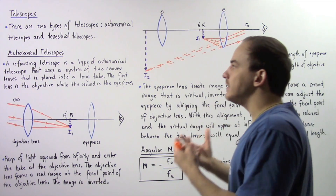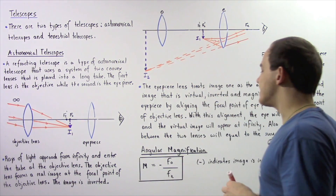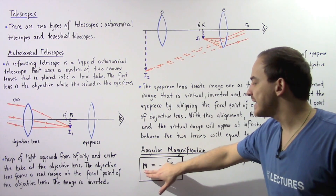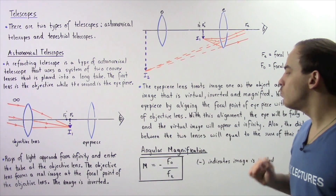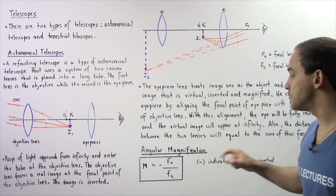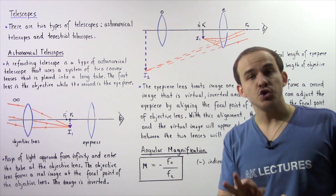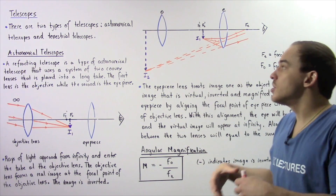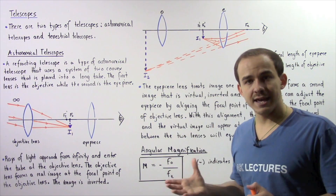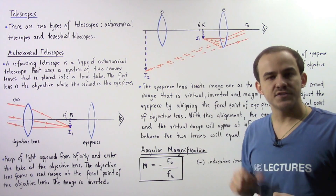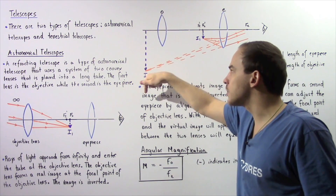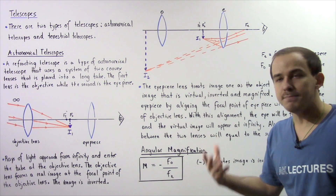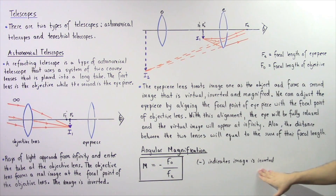The magnifying power of a telescope is also known as the angular magnification, given by the equation: M = −FO / FE. The larger the objective focal length is compared to the eyepiece focal length, the greater the magnification. The negative sign indicates that the image formed by these two lenses is an inverted image.